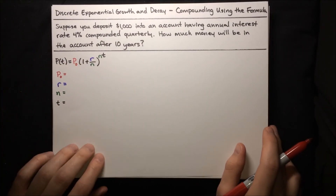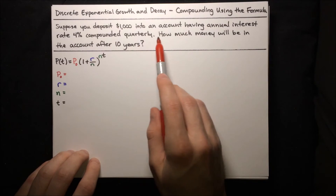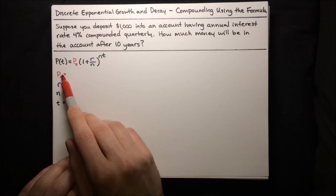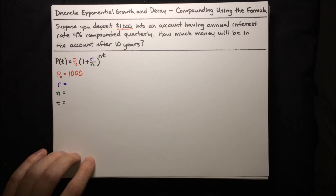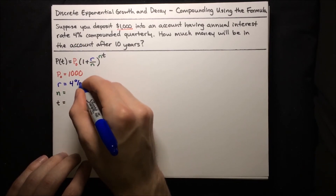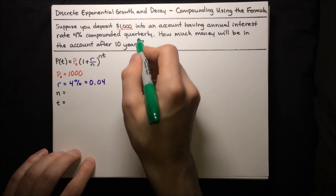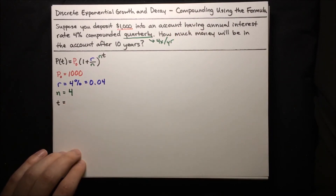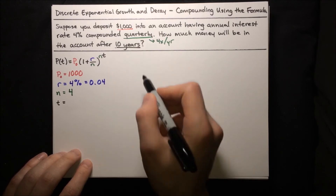Let's do another example using the formula. Suppose you deposit $1,000 into an account having annual interest rate 4% compounded quarterly. How much money will be in the account after 10 years? P0 is $1,000. R is 4%, so 0.04 in decimal. N is the number of times compounded per year — compounded quarterly means 4 times per year, so N is 4. T is 10 years.